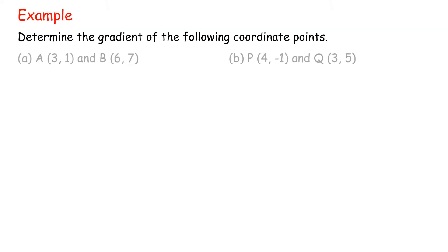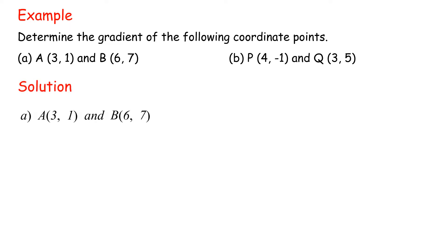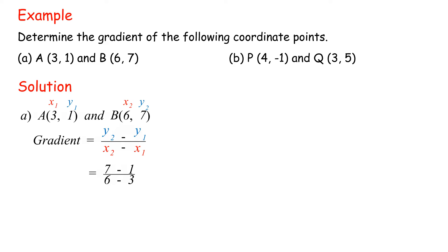Example: Determine the gradient of the following coordinate points. Solution A: A(3, 1) and B(6, 7). Gradient equals y2 minus y1 over x2 minus x1, equals 7 minus 1 over 6 minus 3, equals 6 over 3, equals 2.